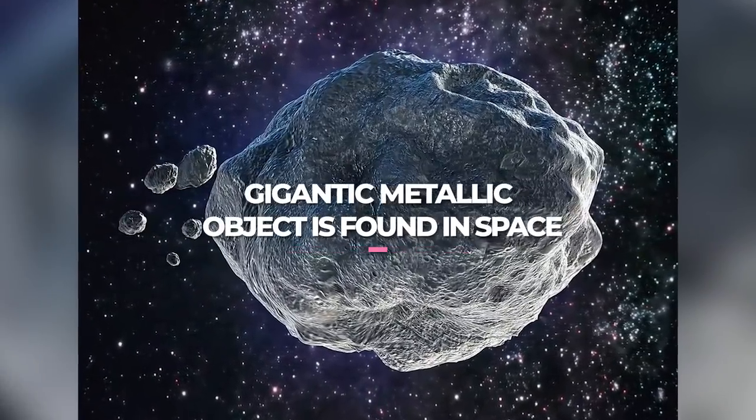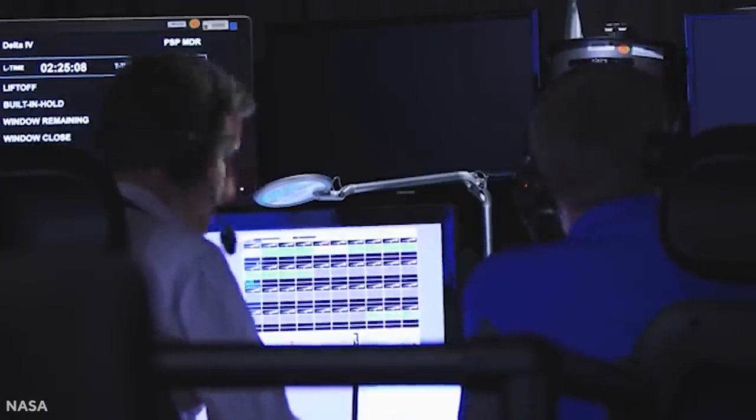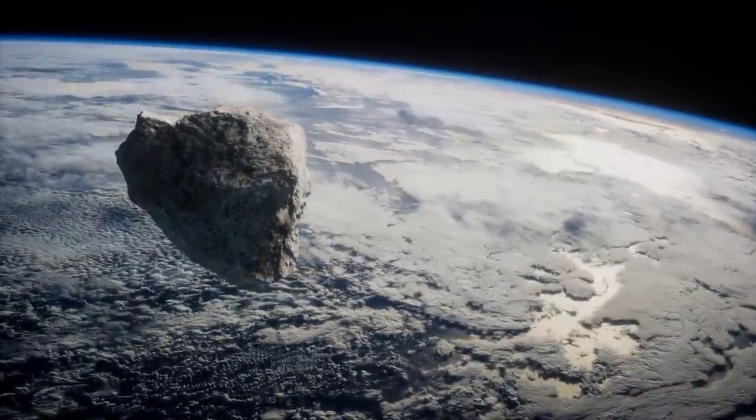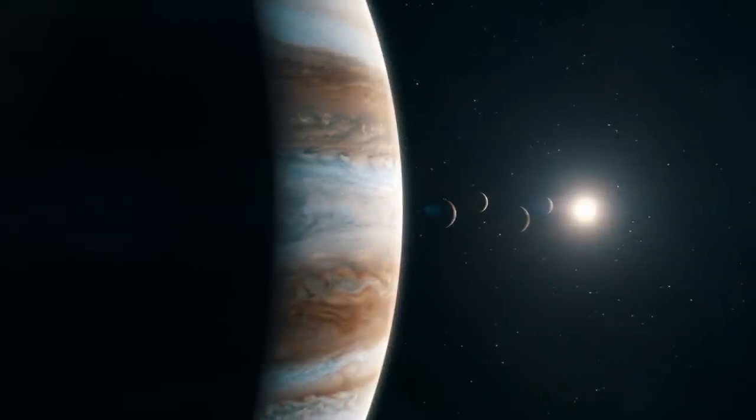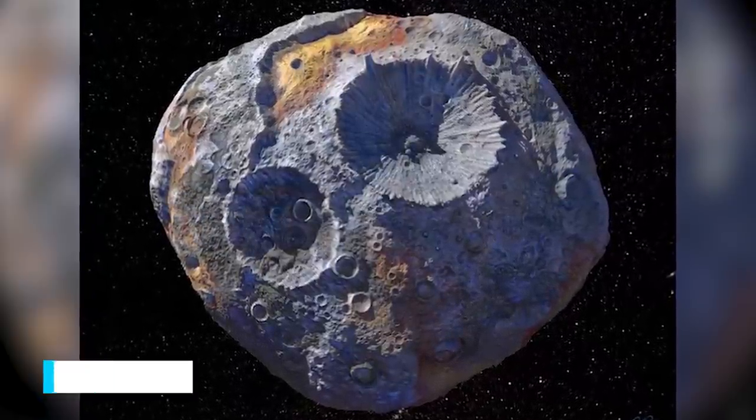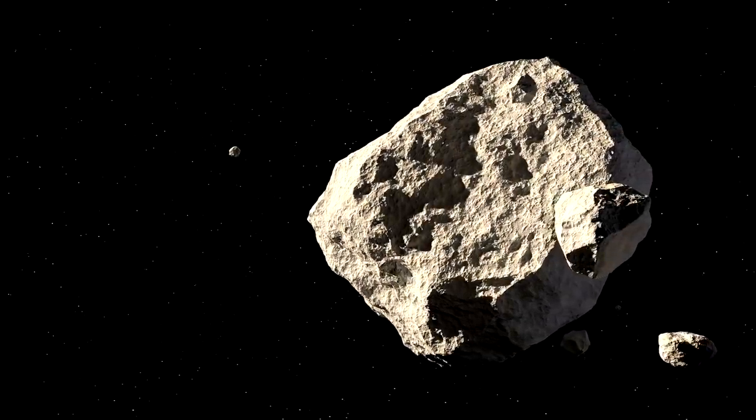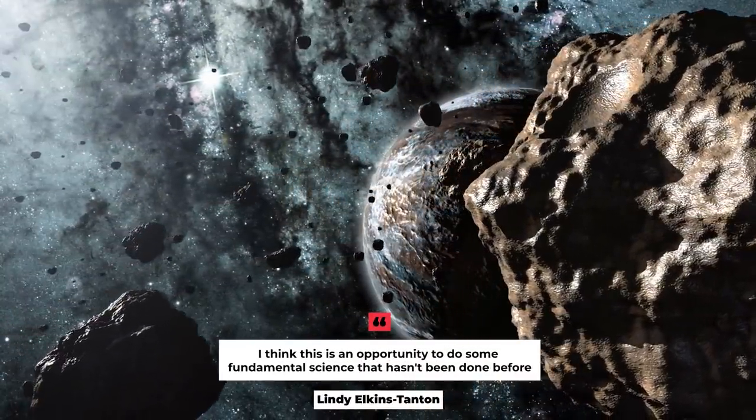Gigantic metallic object found in space. A team of scientists is mapping out a mission to the huge metallic asteroid Psyche, which is thought to be the exposed iron core of a battered and stripped protoplanet. The proposed mission would reveal insights about planet formation processes and the early days of the solar system, its designers say, and would also afford the first-ever good look at an odd class of celestial objects. Team member Lindy Elkins-Tanton, director of the Carnegie Institution for Science's Department of Terrestrial Magnetism, told Space.com that this is the first metal world humankind will have ever seen. I think this is an opportunity to do some fundamental science that hasn't been done before, she added.